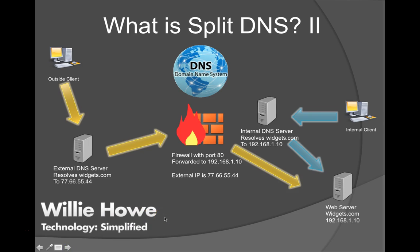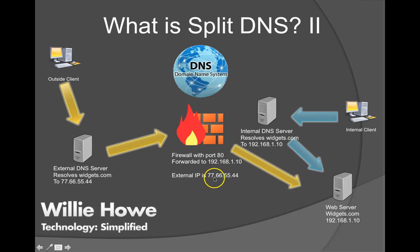When I say external DNS server, you could actually host your internal and external DNS server — they're just answering to different clients. In my example, here's the external DNS server on one side, the internal DNS server on the other, and the firewall in the middle. The external firewall IP is 77.66.55.44.